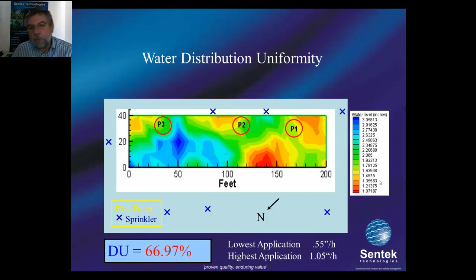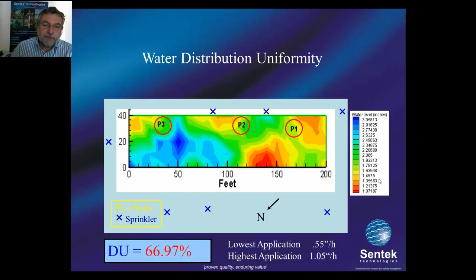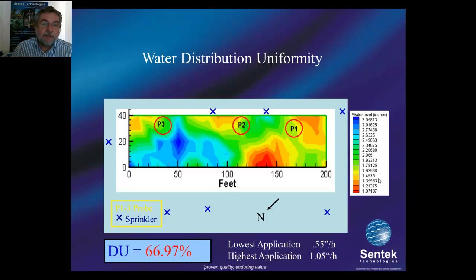Which basically shows you on this little lovely lawn we have a problem. We had a difference in the red area from one inch application to the blue area of more than three inches application, and we picked the green area as an average to put our probe position. You can also calculate distribution uniformity, and it should be more or less above 75%, otherwise you're really wasting your time with irrigation management based on positioning of soil moisture probes.